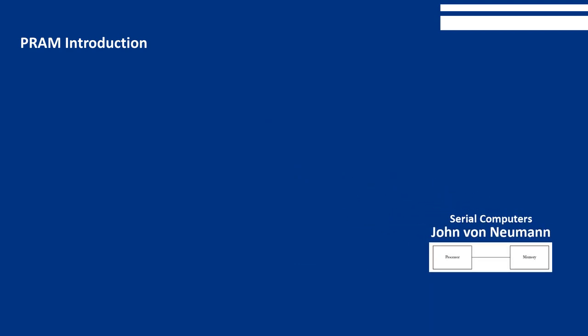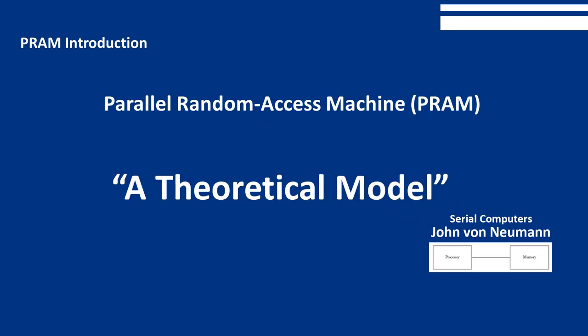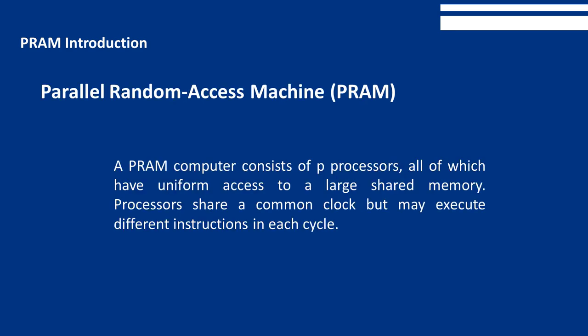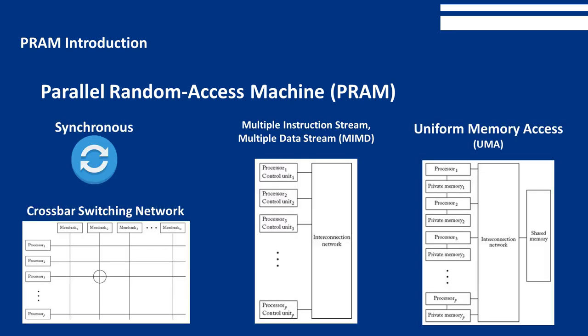There exists a theoretical model for parallel machines, which is called the Parallel Random Access Machine computer. A PRAM computer consists of P processors, all of which have uniform access to a large shared memory. Processors share a common clock but may execute different instructions in each cycle. A PRAM computer is synchronous, multiple instruction stream, multiple data stream, and uniform memory access.